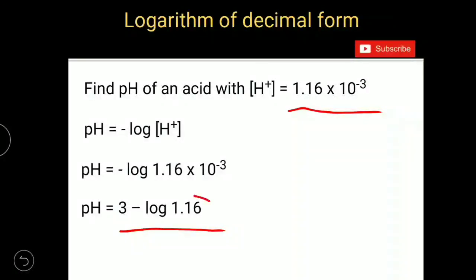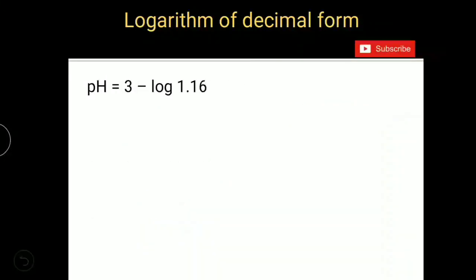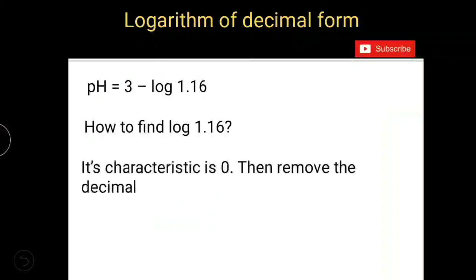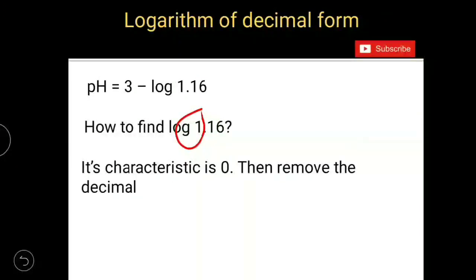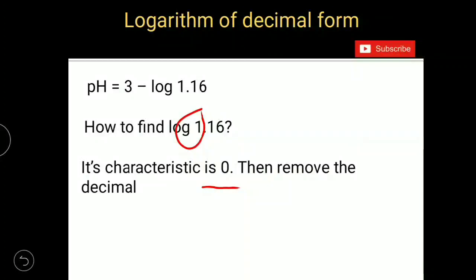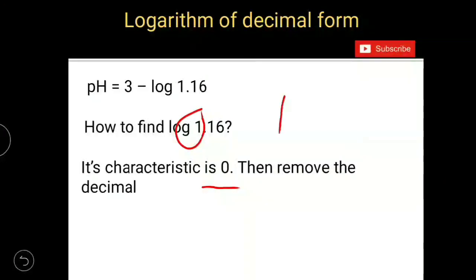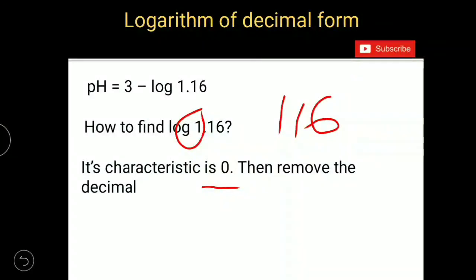So now the question: how can we find log 1.16? Once again, if you find out how many digits present before the decimal, you got only one digit. And subtract 1 from it. Then you will get characteristic value 0. After that, remove the decimal from 1.16. Then it becomes 116. And try to find mantissa of 116 by using this approximation method.